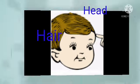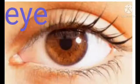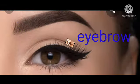Head — the topmost part of the body covered with hair. Eye — aank — we can see with the help of the eye.